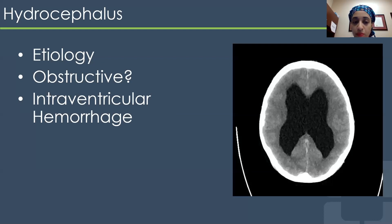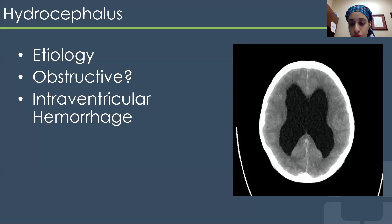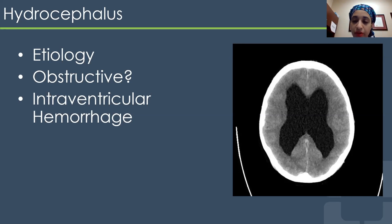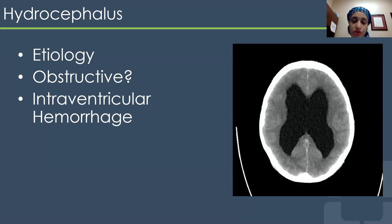The patient had a drain placed emergently. In many of these situations you may also see some intraventricular blood, so the question is always how do you manage that. First things first: you want to treat the hydrocephalus and the compression that excess cerebrospinal fluid is causing on the remaining brain tissue. Intraventricular hemorrhage management varies based on the amount of blood, the location, and whether it causes the drain to clot off.